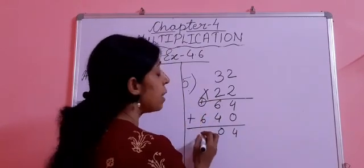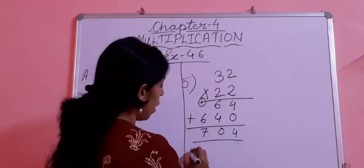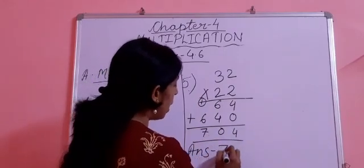So 6 plus 1, we get 7. We write 7 in the hundred's place. Now we get the product 704.